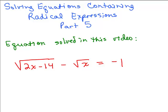This is part 5 of solving equations containing radical expressions and we're going to solve one problem in this video. The equation is: square root of 2x minus 14, minus the square root of x, equals negative 1. You might want to try it on your own first, then watch how I do it showing all of the steps including the check.